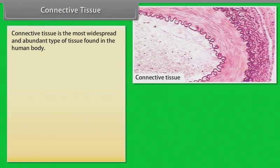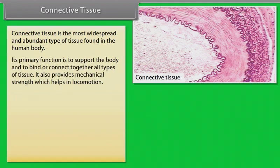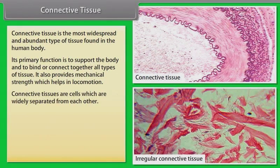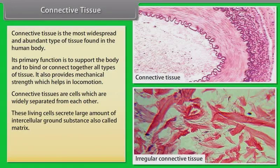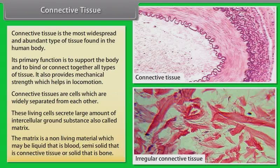Connective tissue. Connective tissue is the most widespread and abundant type of tissue found in the human body. Its primary function is to support the body and to bind or connect together all types of tissues. It also provides mechanical strength which helps in locomotion. Connective tissue cells are widely separated from each other and secrete large amounts of intercellular ground substance, also called matrix. The matrix may be liquid such as blood, semi-solid such as connective tissue, or solid such as bone.